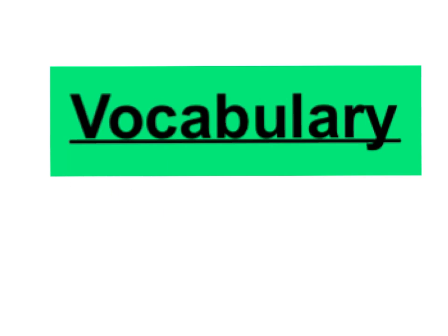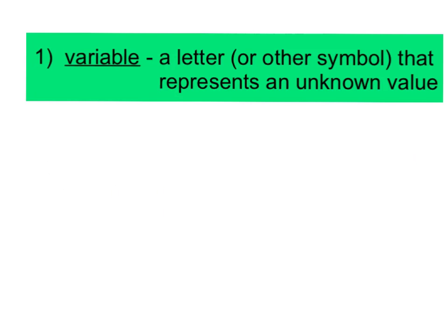The first thing we're going to put into our notes is some vocabulary. We want to make sure that we are all on the same page with that vocabulary, that we're all using some common terms. Here is vocabulary word number one: variable. Please pause your video right now so that you can copy down this definition. A variable is a letter or other symbol that represents an unknown value.